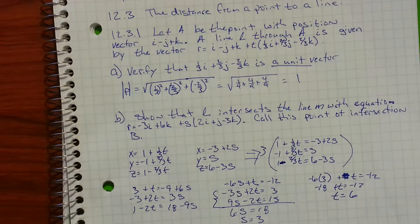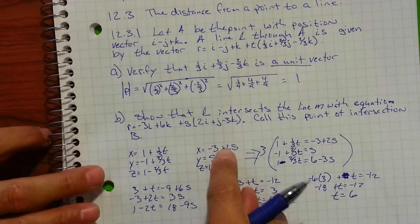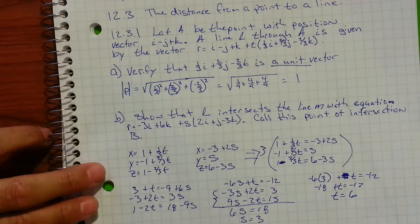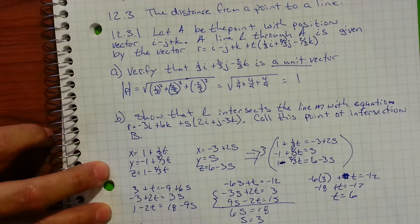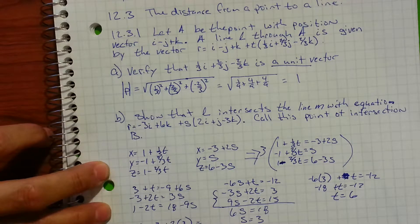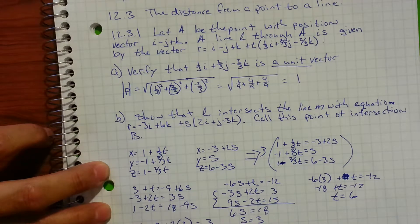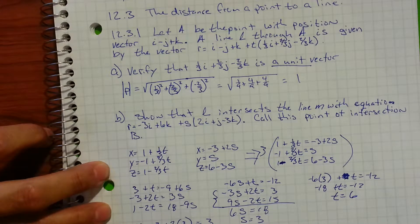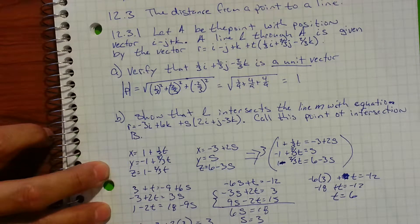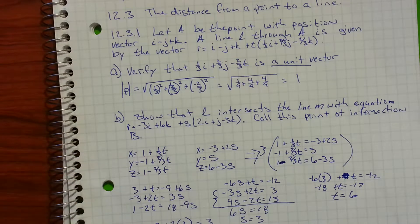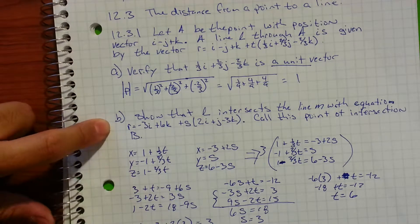To find the intersection point, I'll plug s equals 3 into line M's equations to avoid fractions: x equals negative 3 plus 2 times 3 equals 3; y equals 3; z equals 6 minus 3 times 3 equals negative 3. So the intersection point is (3, 3, -3). As stated in the problem, this intersection point is called B.